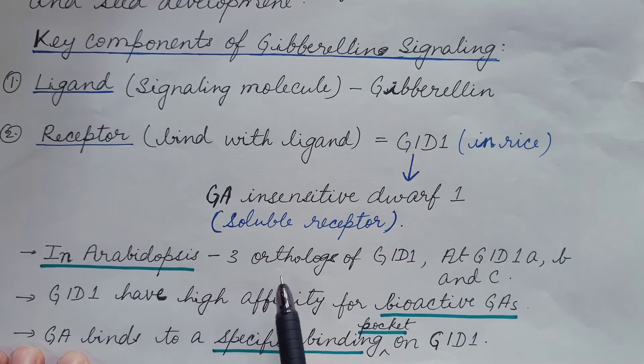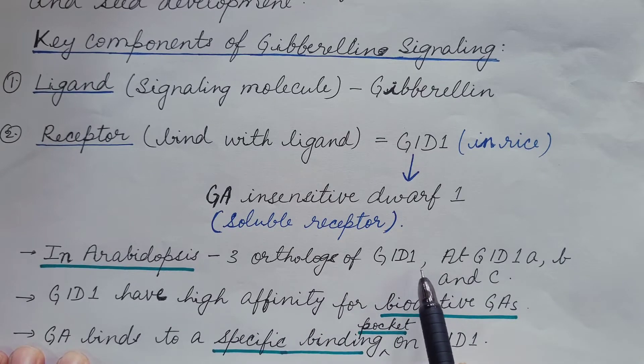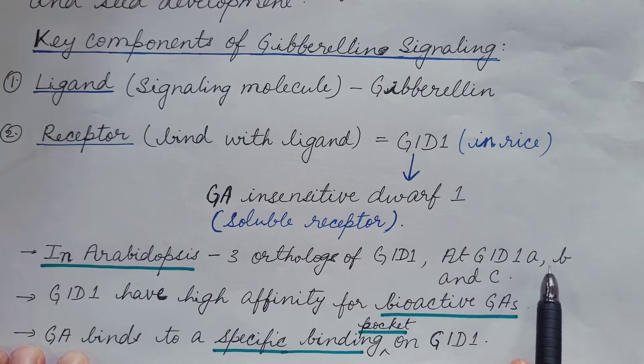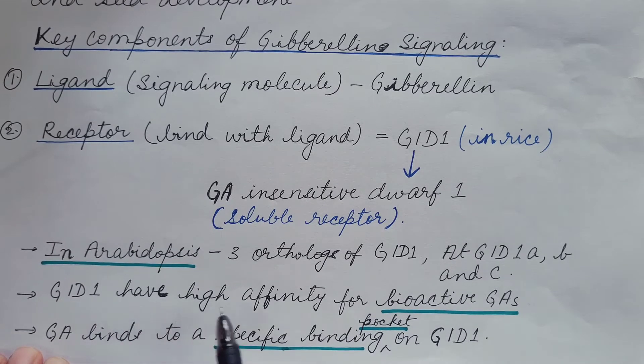In arabidopsis, there are three orthologues of GID1: AtGID1A, B and C. GID1 have high affinity for bioactive gibberellins.